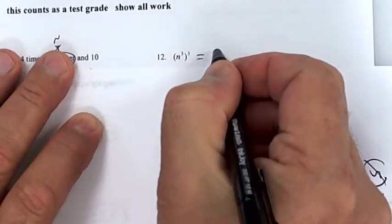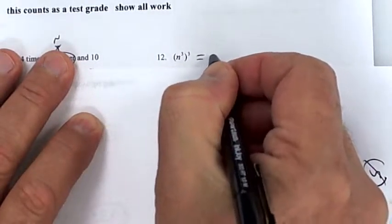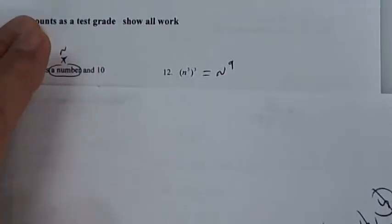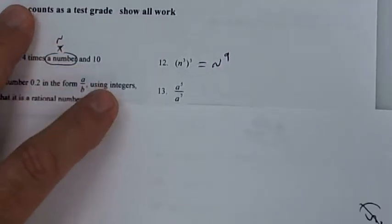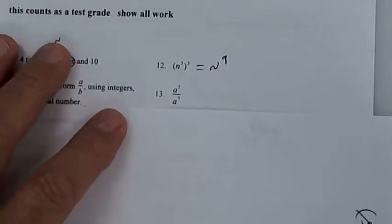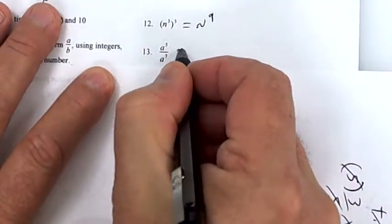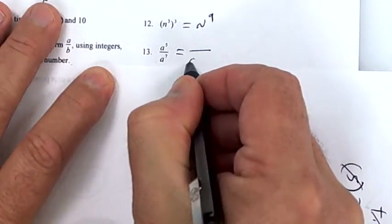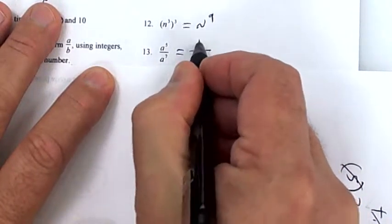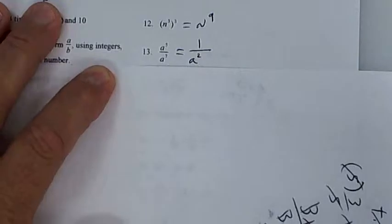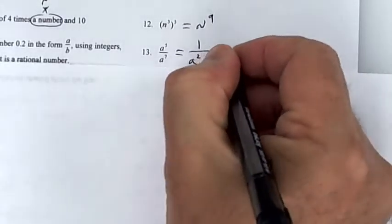For 8^x divided by 8^x: how much is 8 minus 8? Zero — so it's 844 to the zero power, which equals one. On the power-to-a-power rule, three times three gives nine. Do I have more a's at the top or bottom? Two more at the bottom.